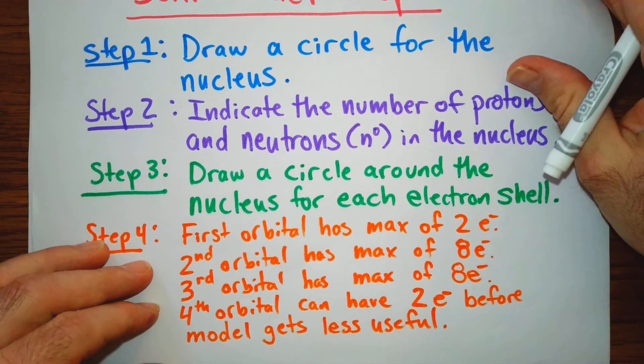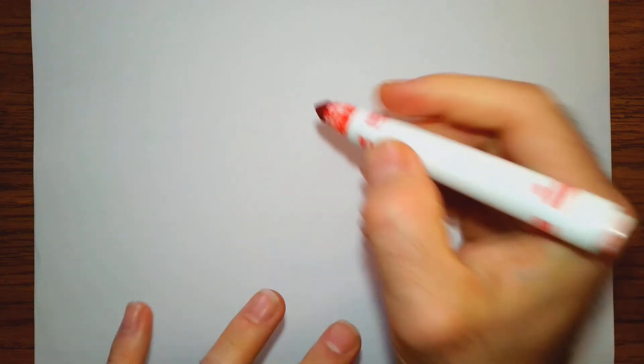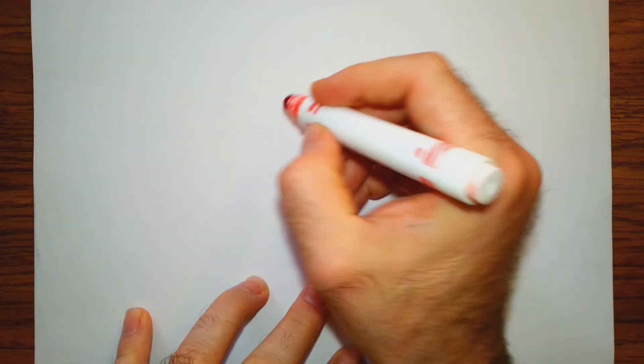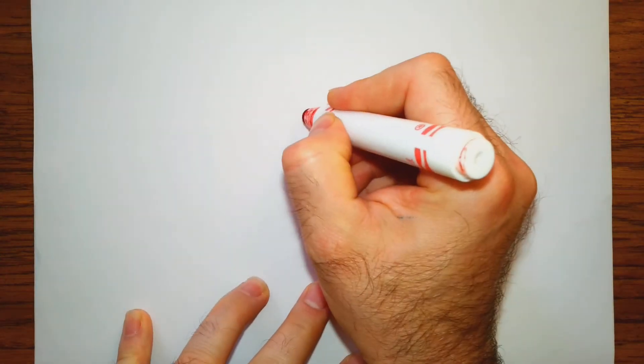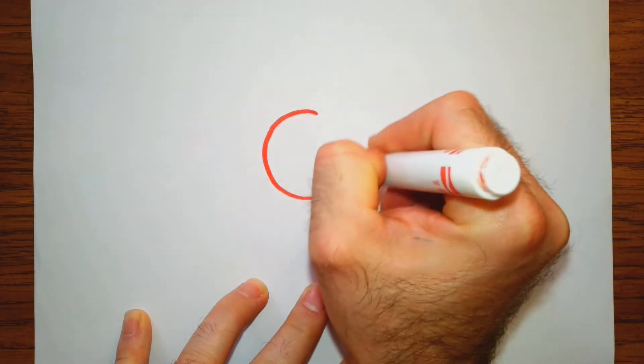So this model is really good for elements up to calcium, which has the atomic number of 20. Let's draw a nucleus here and see what a maxed-out Bohr model would look like.